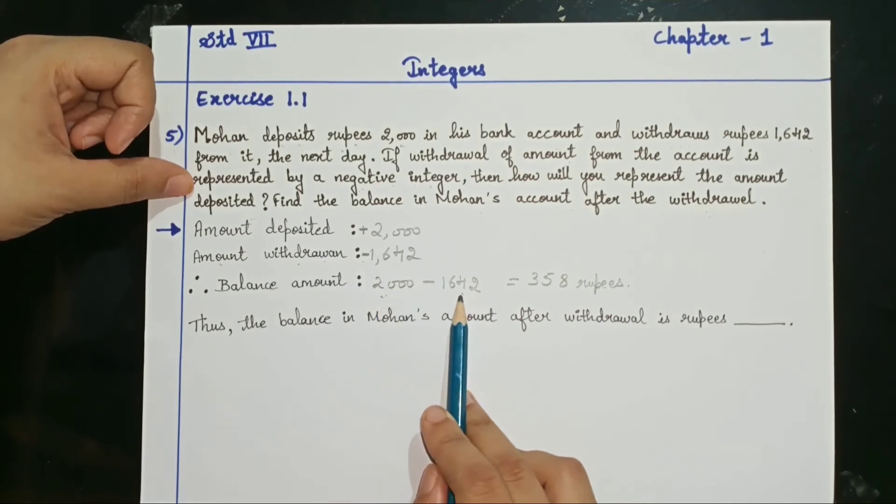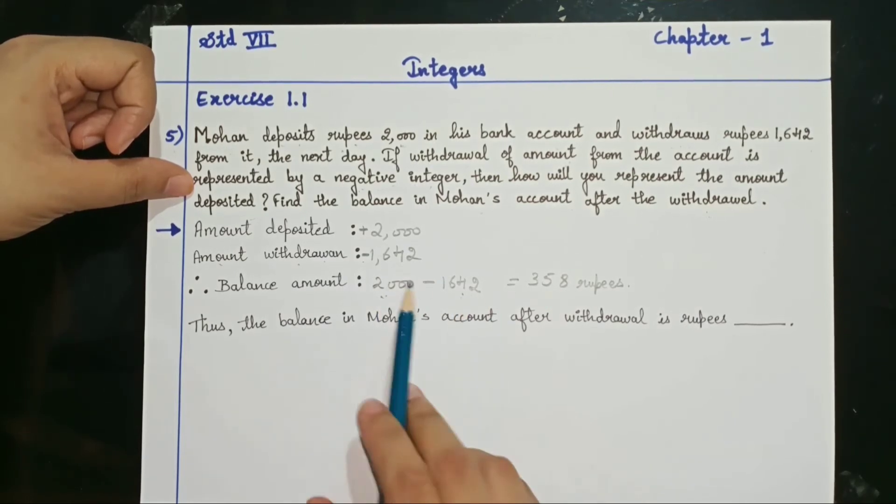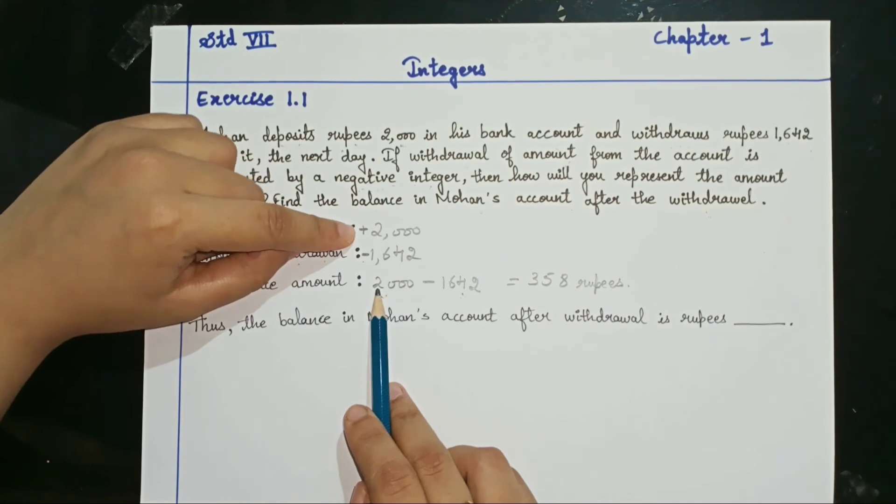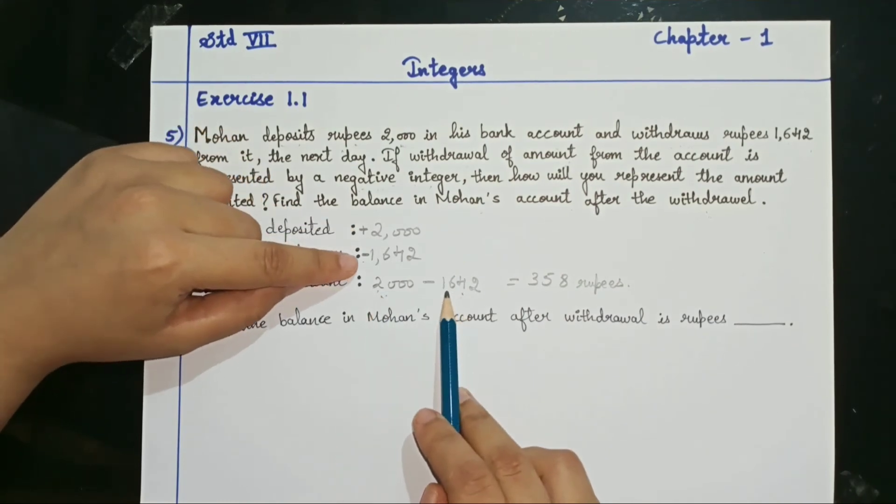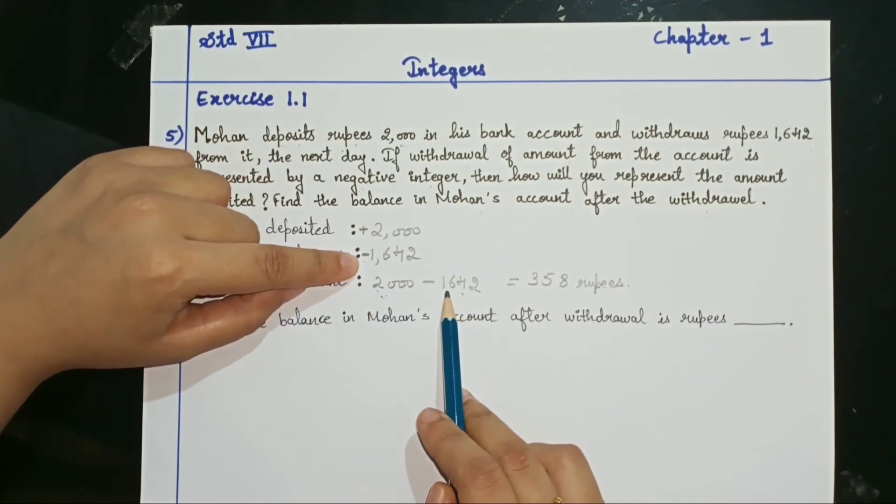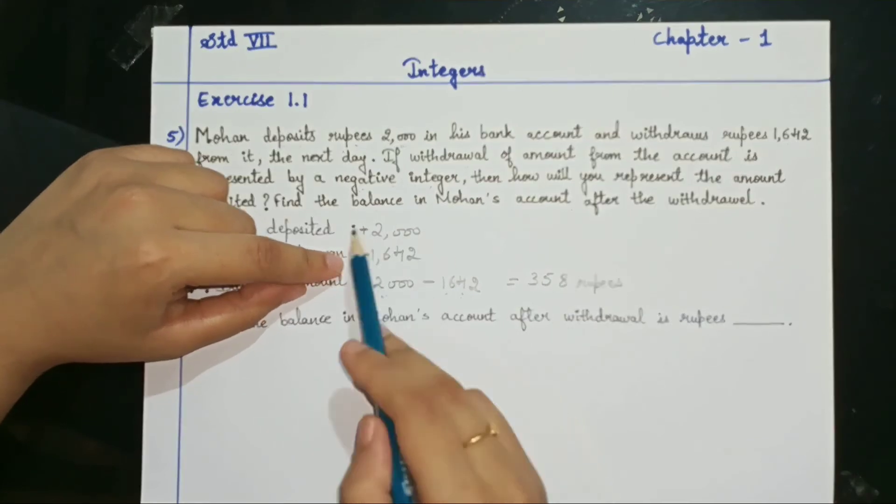This is just to confuse you. Basically you just have to subtract from the amount, you have to subtract the withdrawal amount. We have also taken plus 2000 and here it is minus 1642, we get the correct answer.